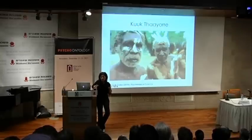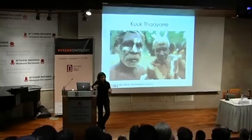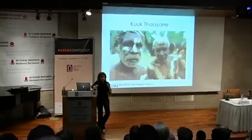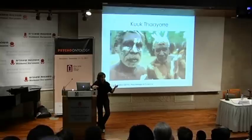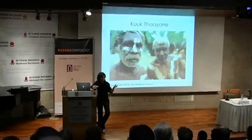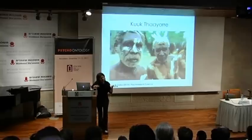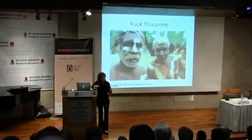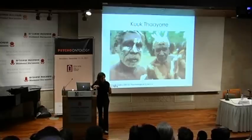In this language, instead of left and right, you put everything in terms of north, south, east, and west — and by everything, I really mean everything. You say things like 'there's an ant on your northwest leg' or 'move the cup to the southeast a little bit.' To speak a language like this, you have to be oriented all the time — not just in the moment, but storing all your memories in oriented space so you can talk about past experiences in a way that preserves absolute orientation. In Kuuk Thaayorre, the way you say hello is: 'which way are you going?' and the answer should be 'north-northwest in the far distance, how about you?'